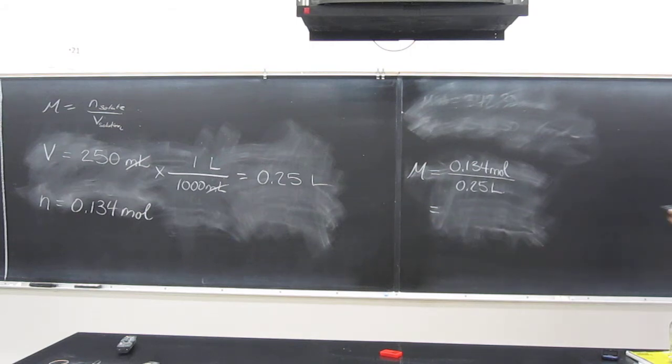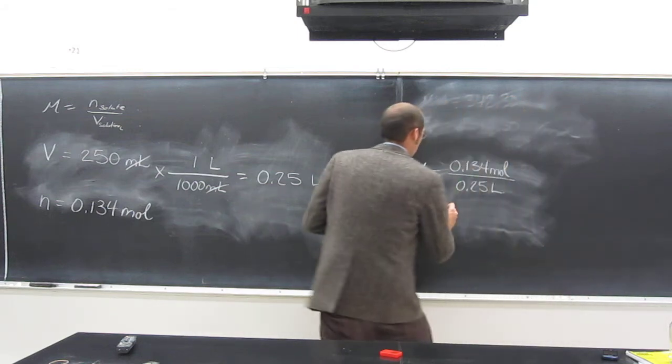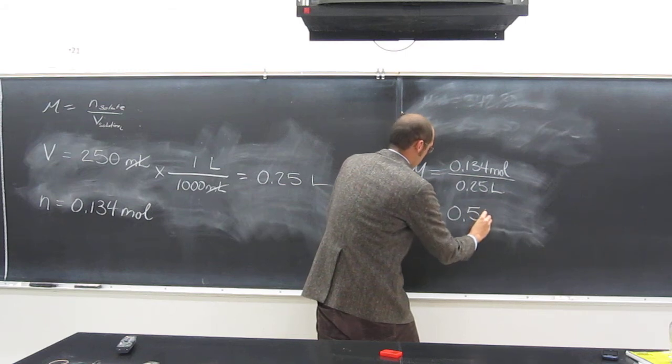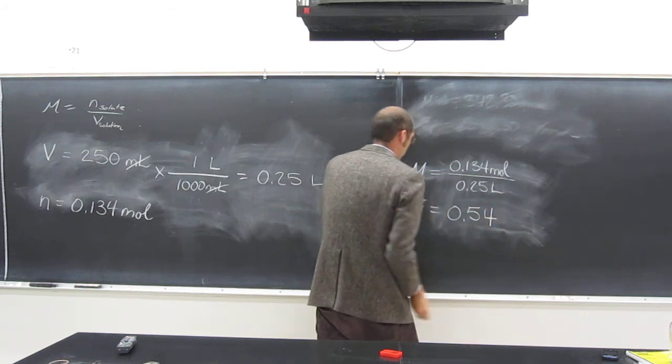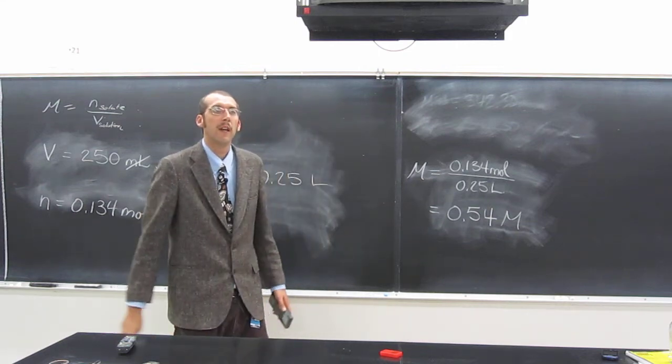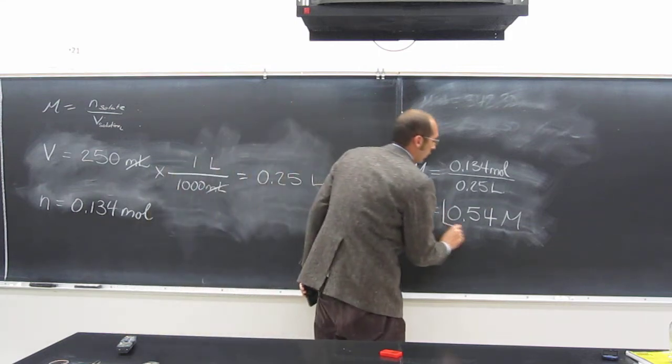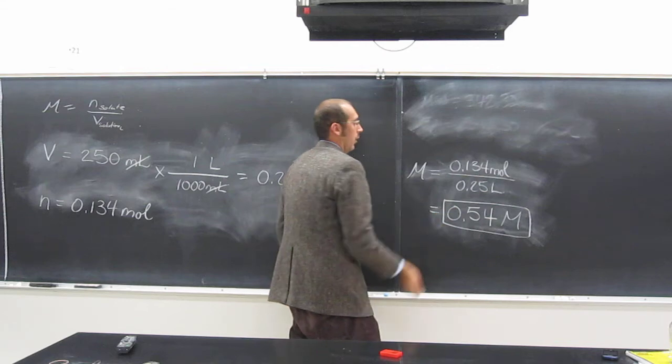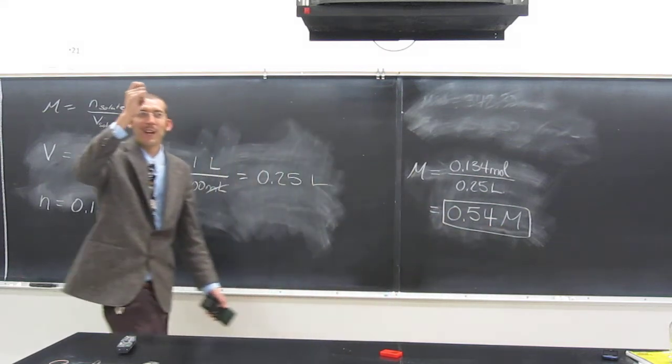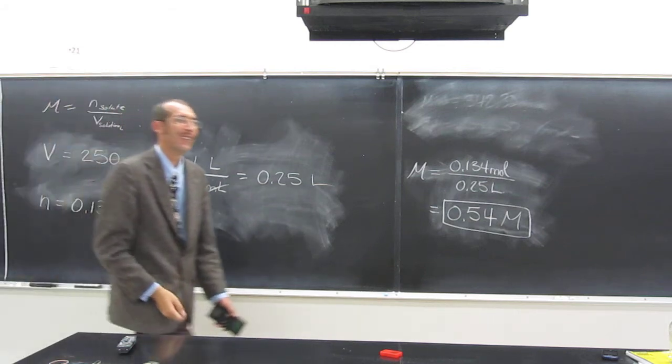What did you guys get? 0.54, right? Molar. It would be two sig figs. Two sig figs. Remember sig figs, guys. Chapter 1 stuff. I think it was the first thing we looked at, right?